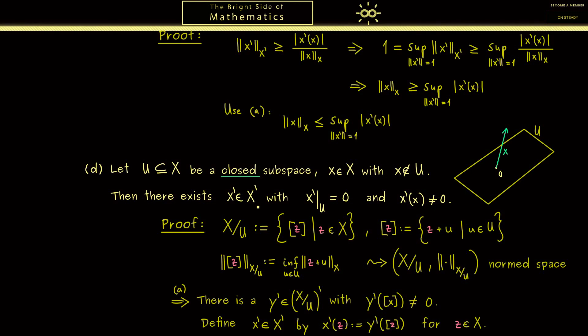Okay then let's check that this x' satisfies all the claims we want here. First we already discussed it, it's a bounded linear functional on X. The second property tells us if we put in any vector of U we get out zero.